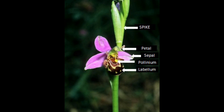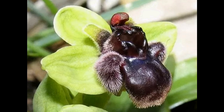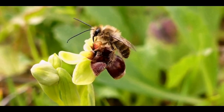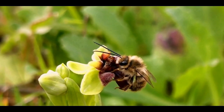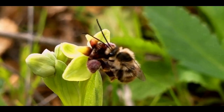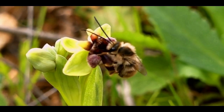The labellum is trilobed with two pronounced humps on the hairy lateral lobes, and a hairy median lobe having a pattern that mimics the female bee in size, shape, and markings. The male bee gets attracted to it, perceiving it as a female bee, and pseudo-copulates with the flower. During this process it gets dusted with pollen. When this bee sits on another flower for pseudo-copulation, it transfers the pollen to the other flower and thereby pollinates it.